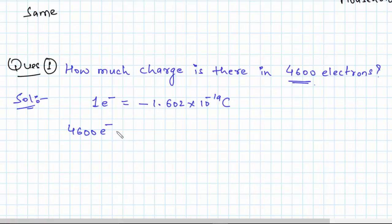For 4600 electrons, the charge will be minus 1.602 times 10 to the power minus 19 coulombs times 4600 electrons. The charge on one electron is this much, so here I can write minus 1.602 times 10 to the power minus 19 coulombs per electron. So now you can cancel electron with electrons and all you will have is minus 7.369 times 10 to the power minus 16 coulombs. I have basically multiplied 1.602 with 4600.